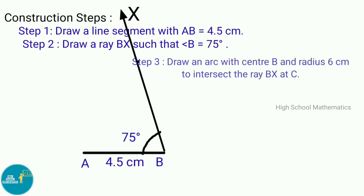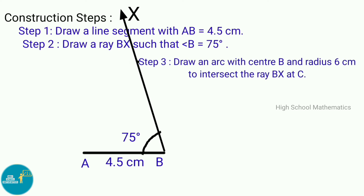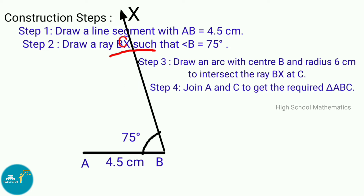Step 3: Draw an arc with center B and radius 6 centimeters to intersect ray BX at C. Step 4: Join A and C to get the required triangle ABC.